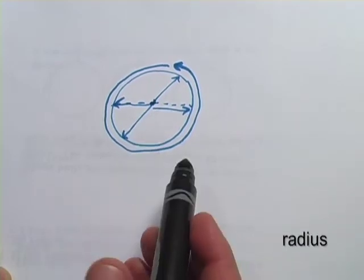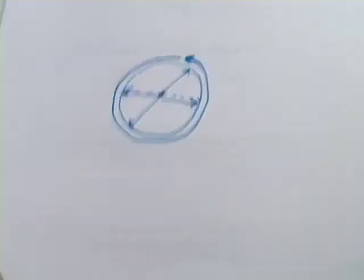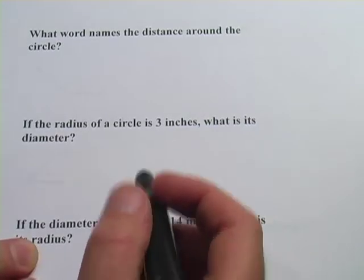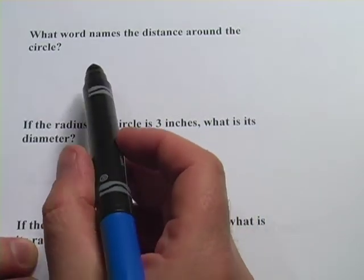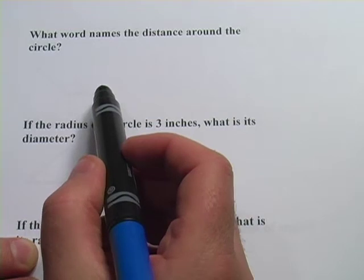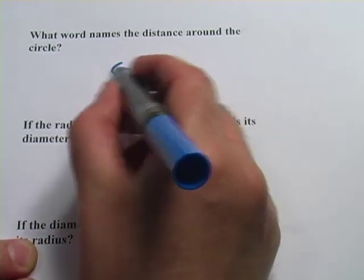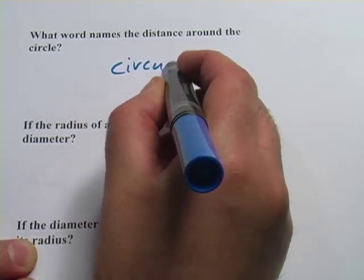So diameter, radius, and circumference. Let's look at some problems. This one says, what word names the distance around the circle? And that is circumference.